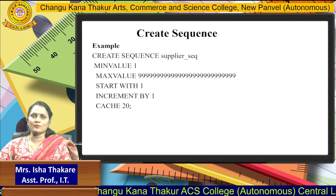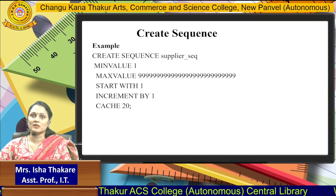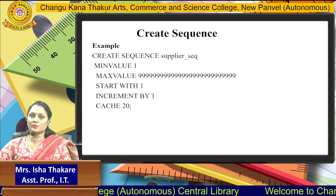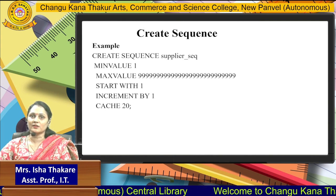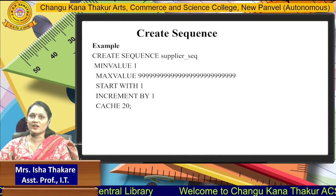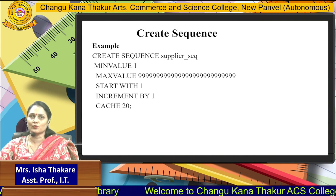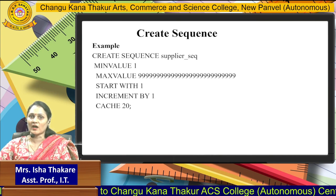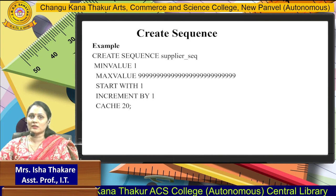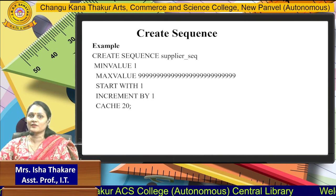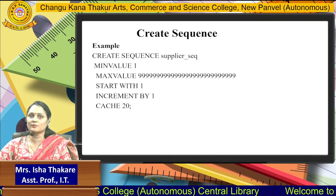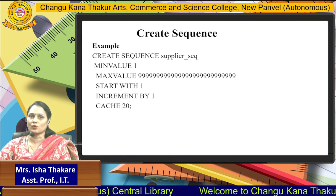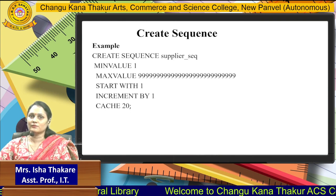Here is an example of creating a sequence. CREATE SEQUENCE supplier_sequence — the minimum value is 1, the maximum value is the provided range, START WITH 1 means the sequence starts at 1, INCREMENT BY 1 means it goes 1, 2, 3, 4, 5. If the increment value is 2, it goes 1, 3, 5, 7, and so on. The cache value provided here is 20.